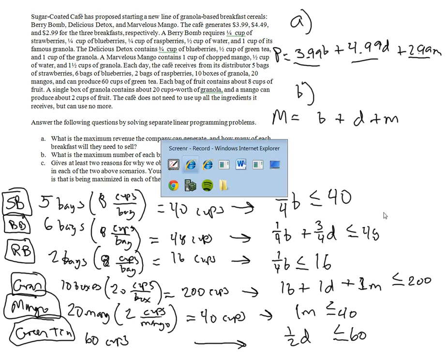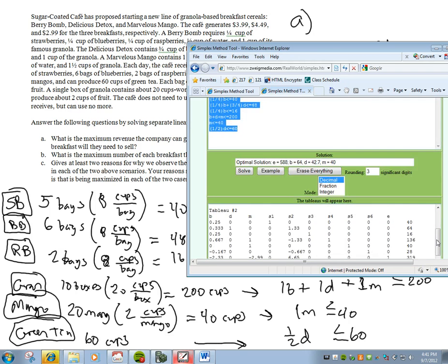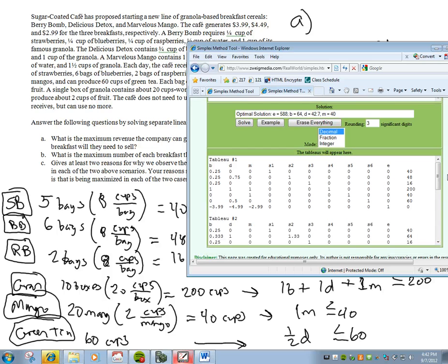Once we get these all set up, the matrix is quite long, so we'll run through that really quickly here. And what we'll see is that we have BDM, and since we have six constraints for each of the six ingredients, we're going to have six slack variables, and you can kind of see how they go down in this identity matrix type format.